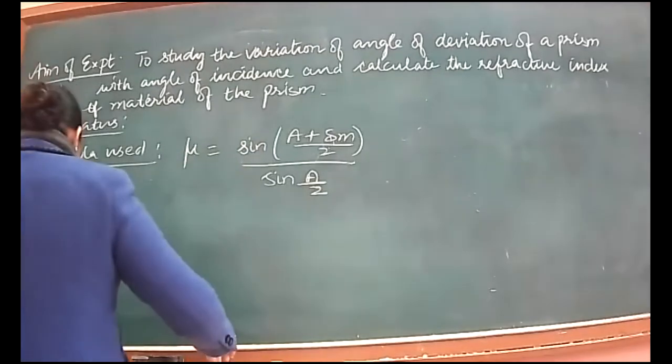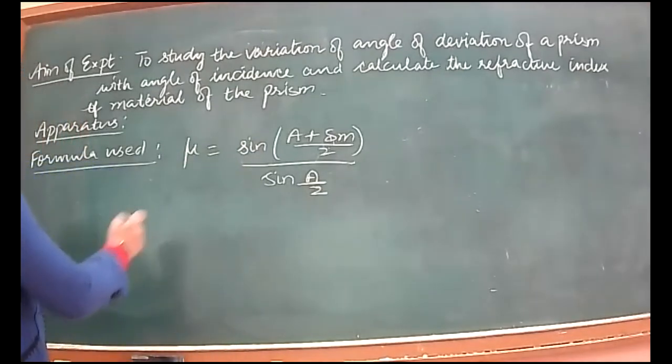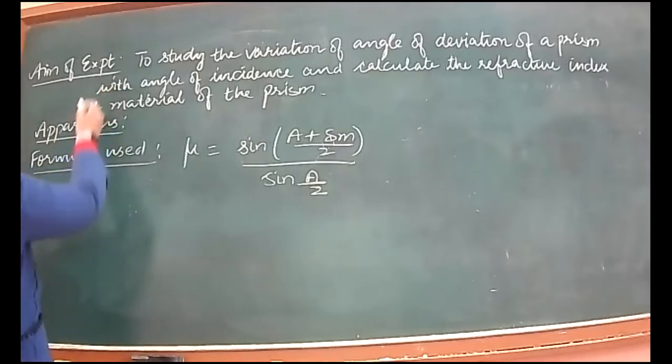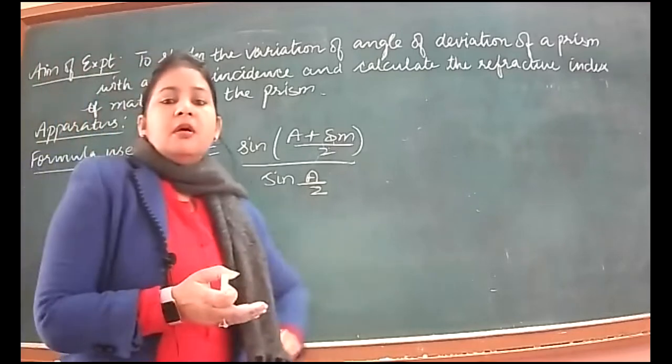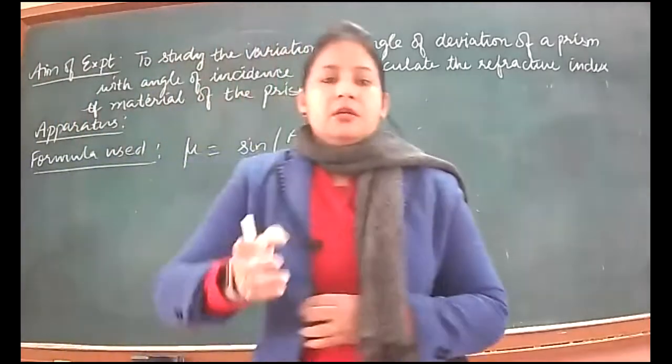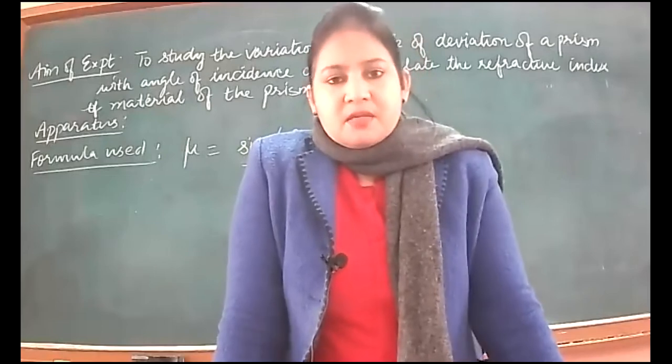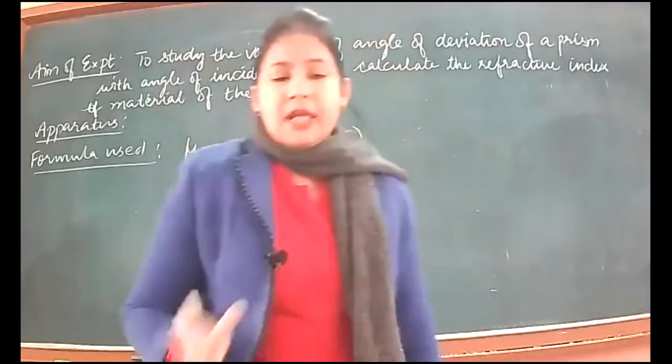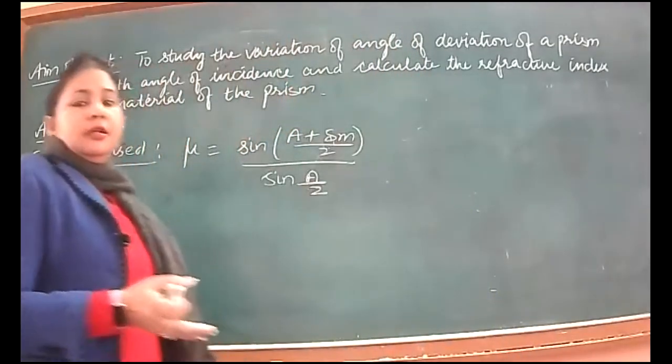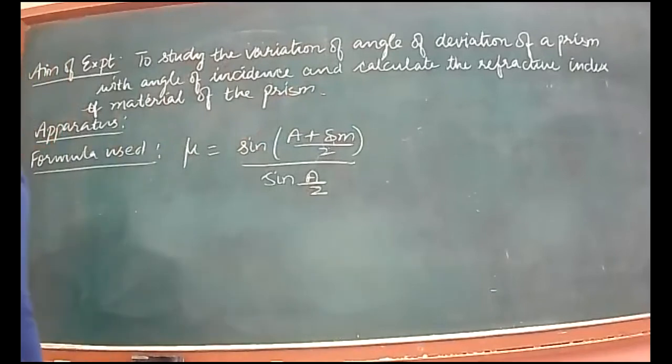Apparatus made: there will be a prism, pins, drawing board, drawing sheet, thumb pins, common pins, scale, and protractor.